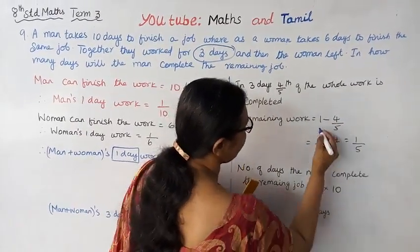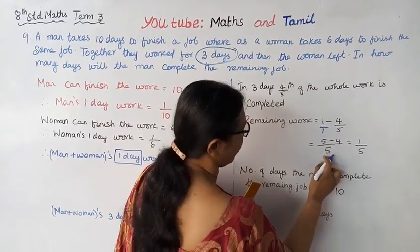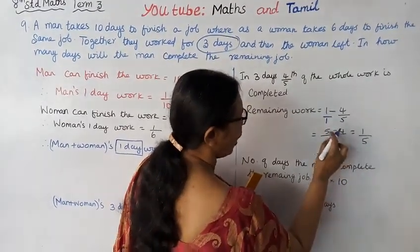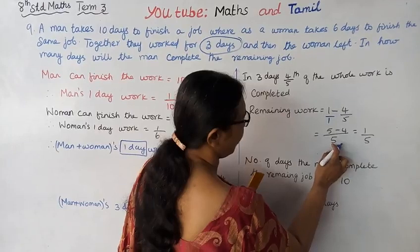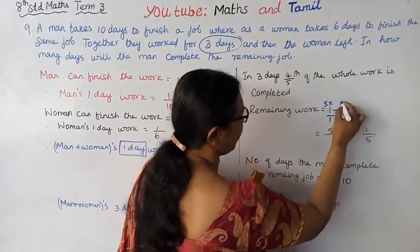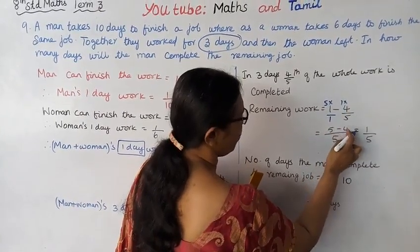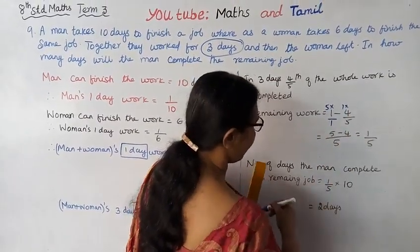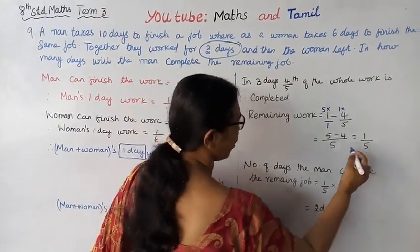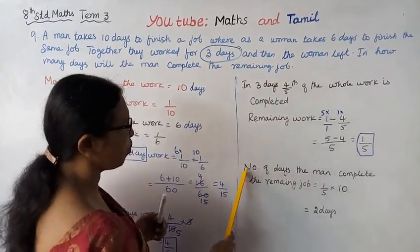1 minus 4/5: 1 can be written as 5/5. 5/5 minus 4/5 equals 1/5. The remaining work is 1/5.